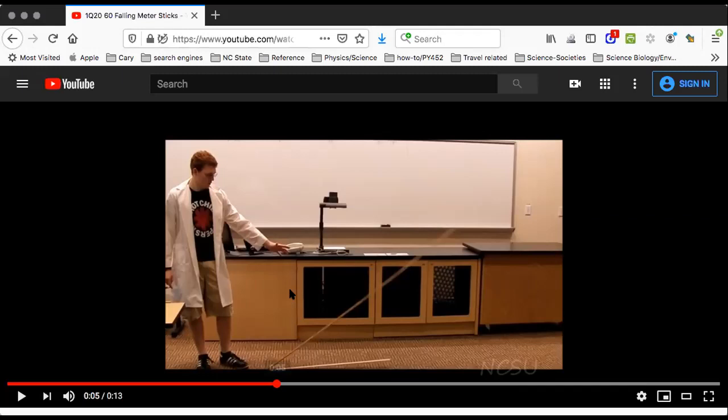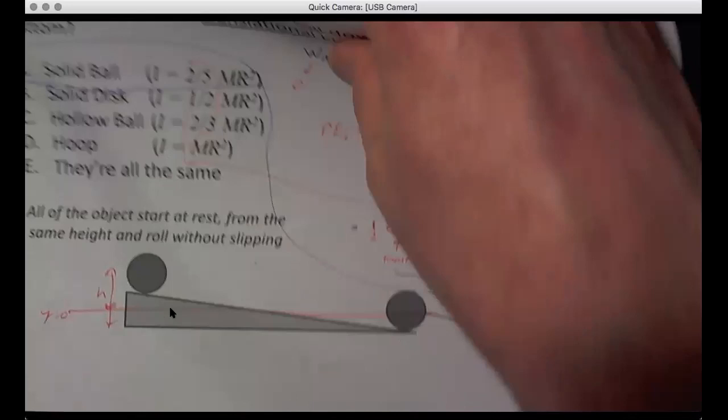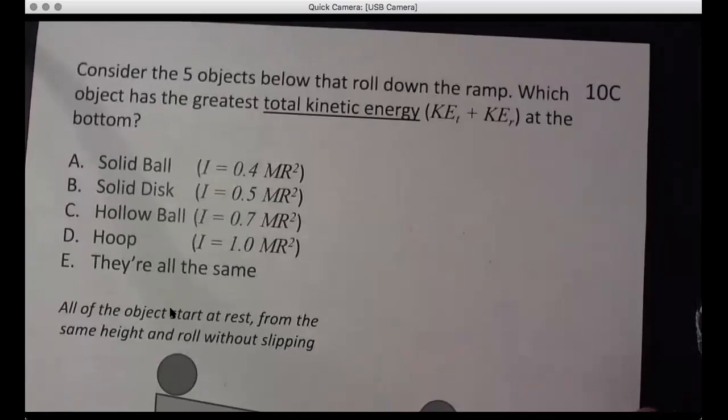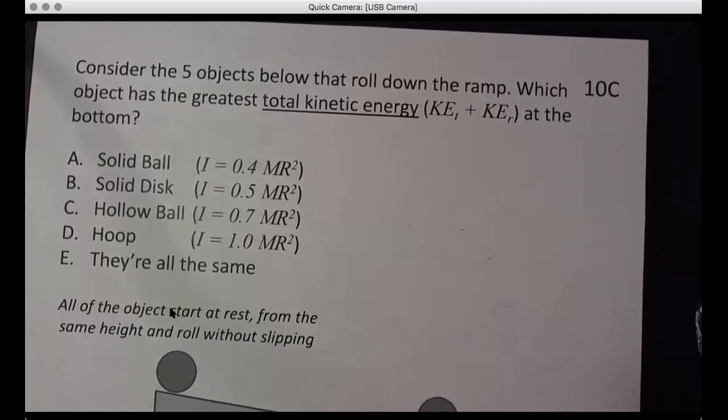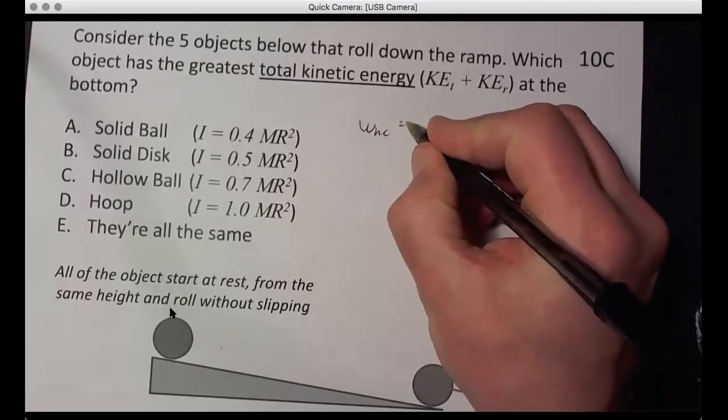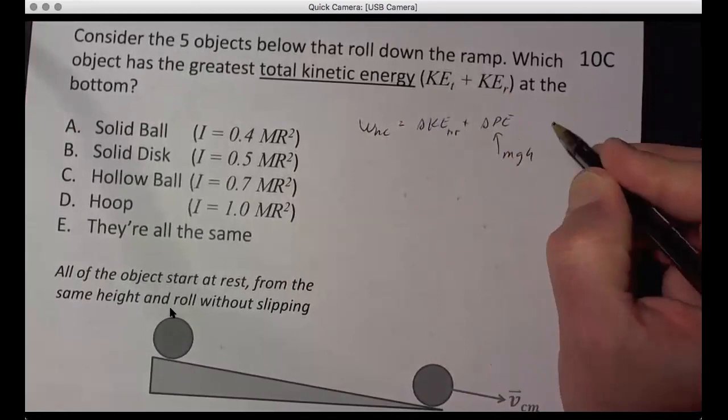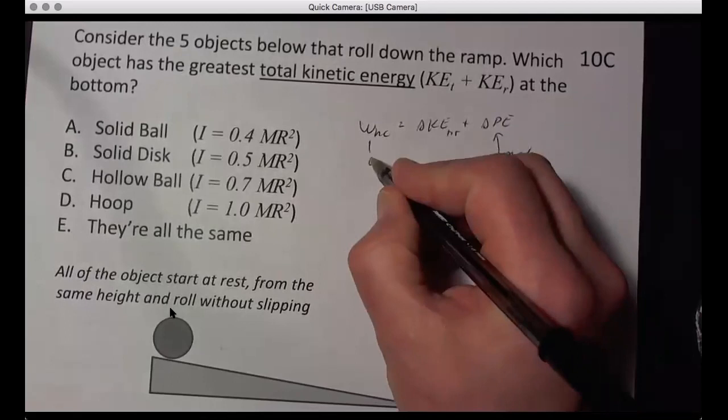Okay, so let's go back to our camera and hit the next problem. Which has the greatest total kinetic energy at the bottom? And we have the same three. Now remember what we had before, we had work non-conserving equals delta KE plus delta PE. Well, that's total. That's MGH. And that's presumably zero.